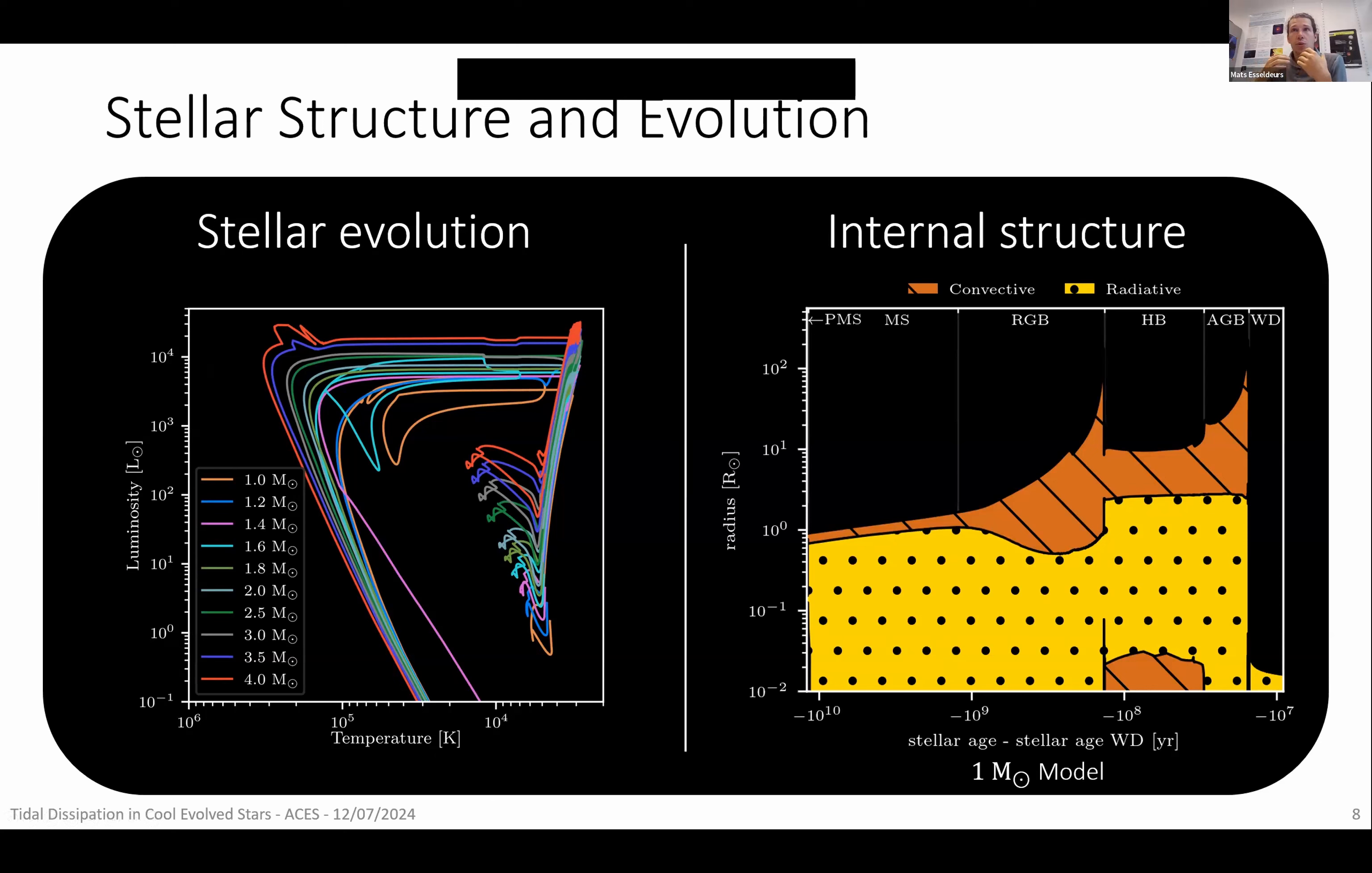This allows me to indicate on one diagram all the different late stellar evolutionary phases. Like we have the main sequence here, the RGB here, then the horizontal branch, the asymptotic giant branch, and then when it cools down to become a white dwarf. And when we have this internal structure, we can use all of this information to start calculating the tides.